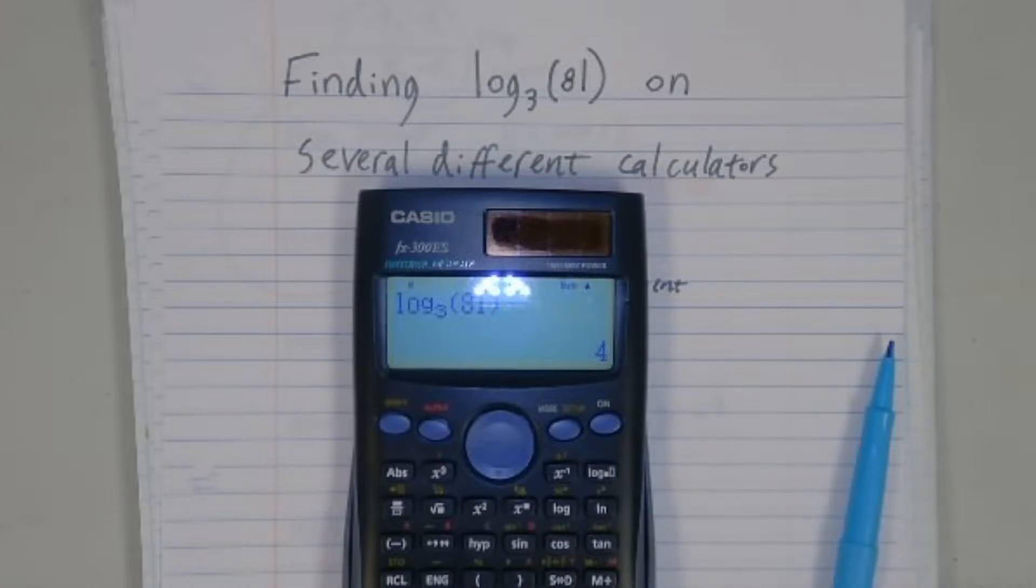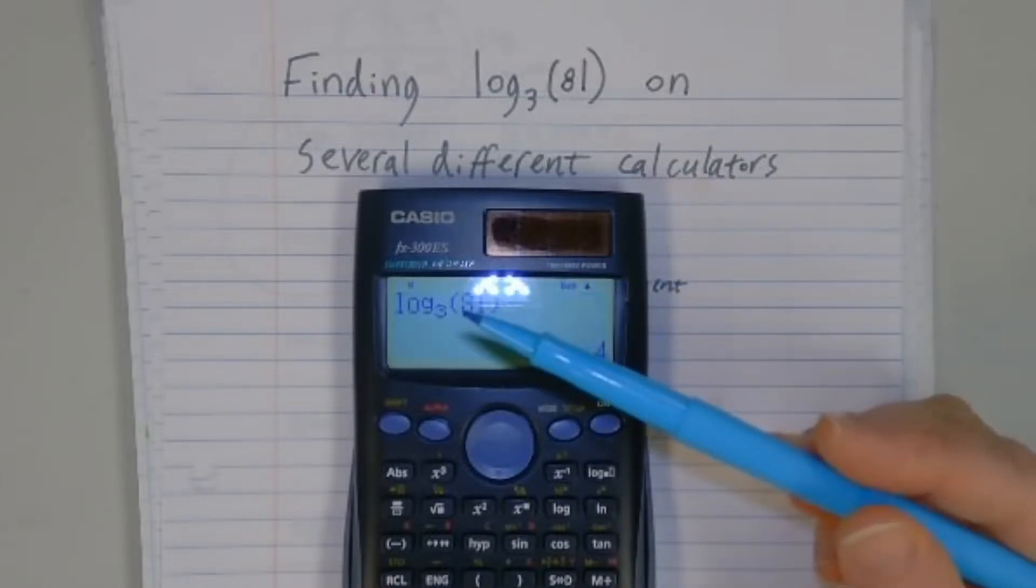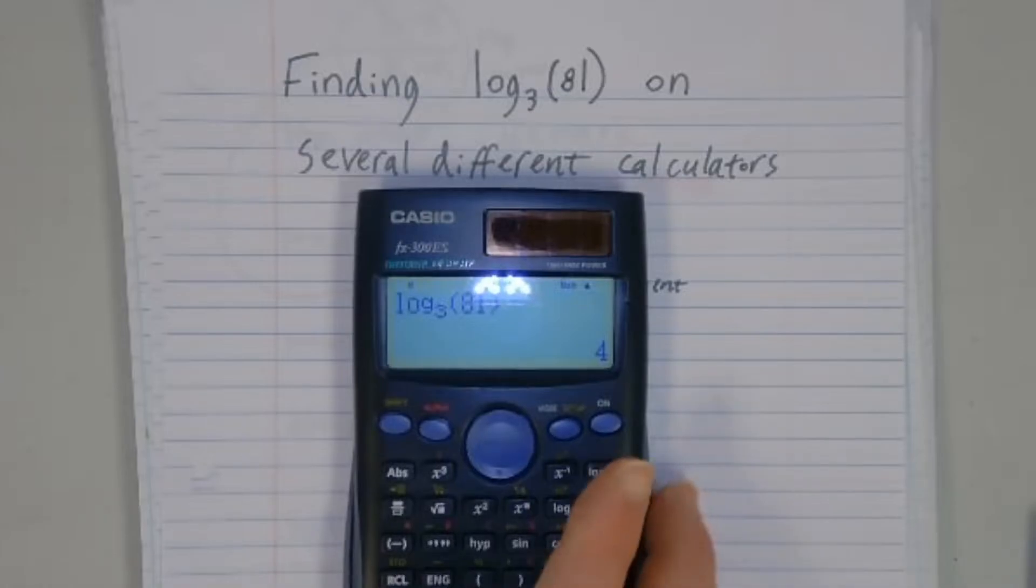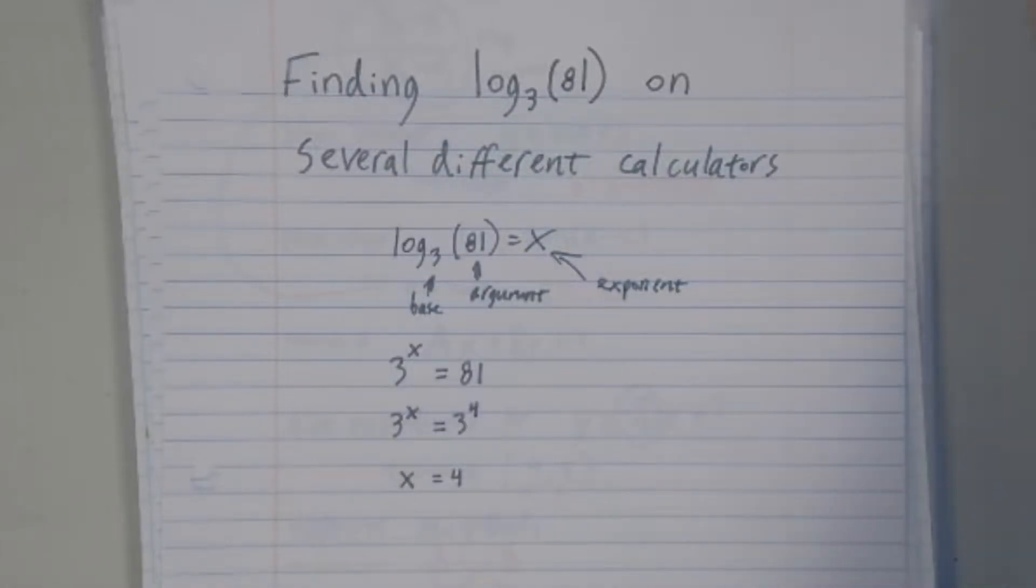But a lot of calculators don't have a button like that. It's somewhat unusual. Even calculators that cost more than this Casio by other manufacturers may not have that particular button. But you don't have to buy a whole new calculator just because your calculator doesn't have an arbitrary base because of something called the change of base formula.